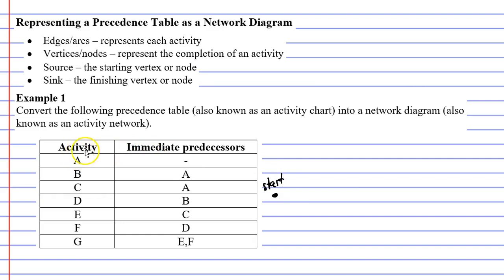When we look at our precedence table, you might notice that activity A does not have any immediate predecessors, meaning that this is the first activity that we need to complete.